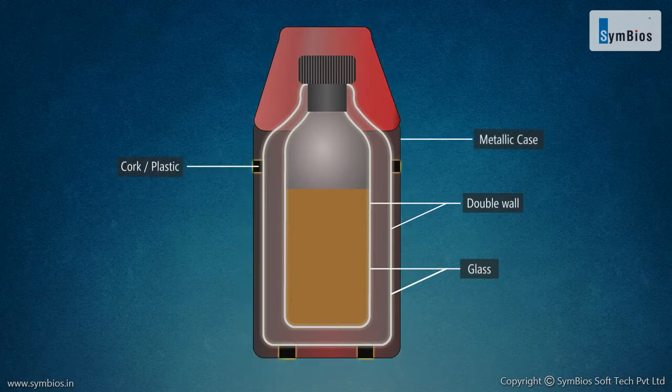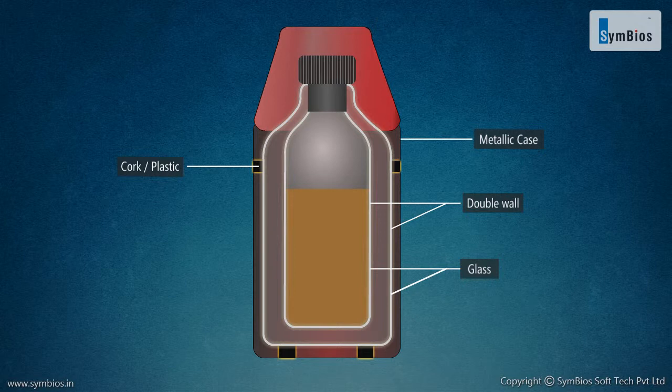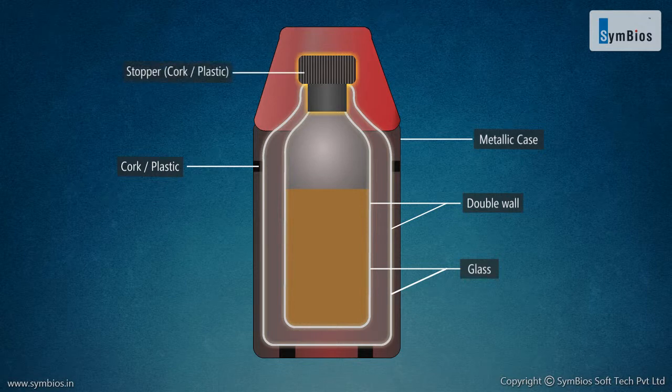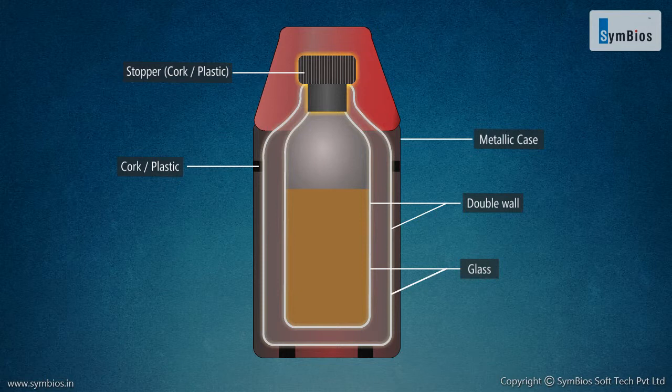Cork or plastic supports are used to separate the outer wall of the glass vessel and the inner wall of the metallic case. This prevents the glass vessel from breaking. The mouth of the vessel is closed by a stopper made of an insulating material like cork or plastic.